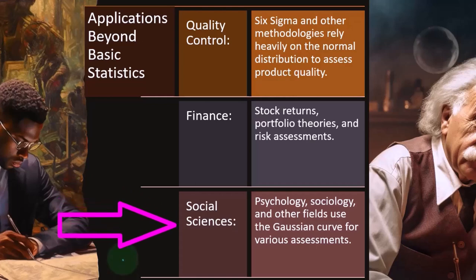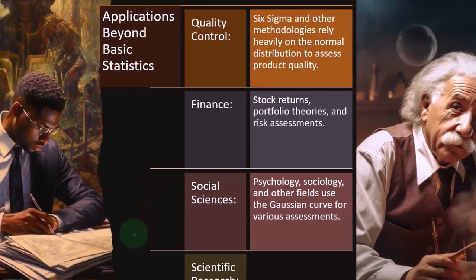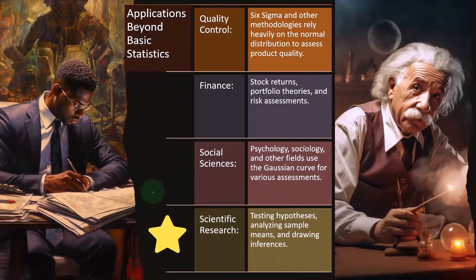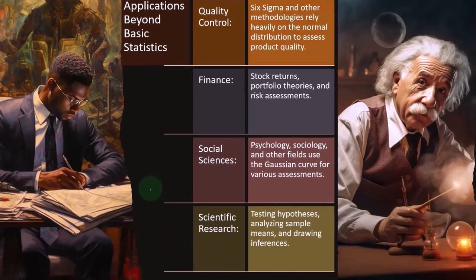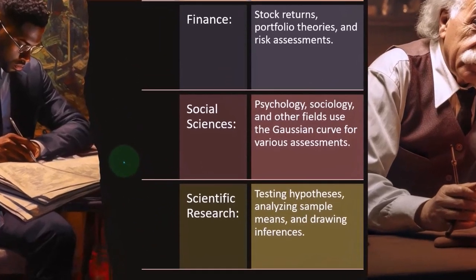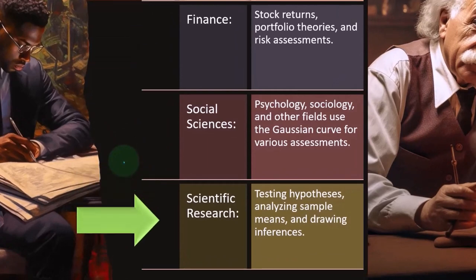In science, and especially in social science type of fields, it might be quite common as we're looking at things in nature that we might be applying and using statistical concepts, such as the normal distribution. Scientific research: testing hypotheses, analyzing sample means, and drawing inferences. Whenever we're doing sampling, which is quite common in sciences, as well as in political areas, we need to know the statistics behind it, including the concept of the normal distribution.